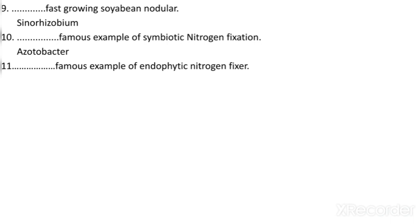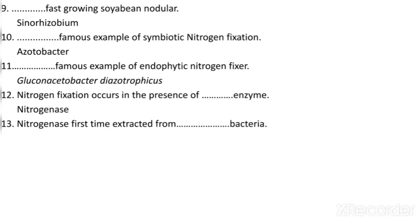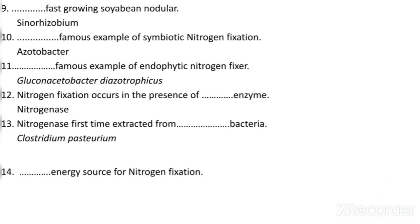Which is the famous example of endophytic nitrogen fixer? Endophytic organisms are those which stay inside plant tissues. The example is Gluconacetobacter diazotrophicus. Nitrogen fixation occurs in the presence of which enzyme? It occurs in the presence of the nitrogenase enzyme. These questions are frequently asked in CSIR and ICAR NET. Nitrogen was first extracted from which bacteria? It was extracted from Clostridium pasteurianum.